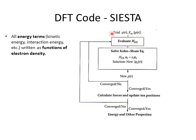In the first step, SIESTA initiates the electron density for the material. After that, it evaluates the Hamiltonian, because the Hamiltonian is a function of electron density. Then it solves the Schrodinger equation for new wave functions. From the wave function, we can get the new electron density. If the new electron density is not the same as the input electron density, the calculation is not converged, and SIESTA will return to the first step using the new electron density as input to evaluate the Hamiltonian and solve the Schrodinger equation again.